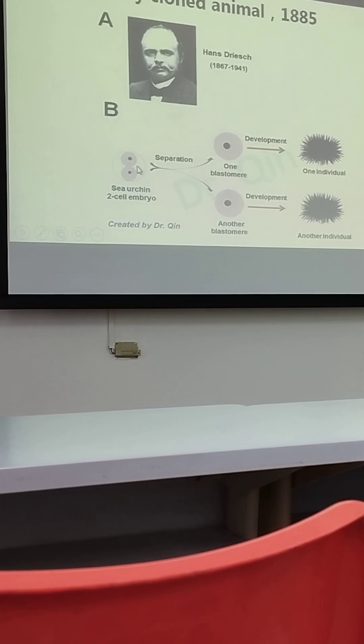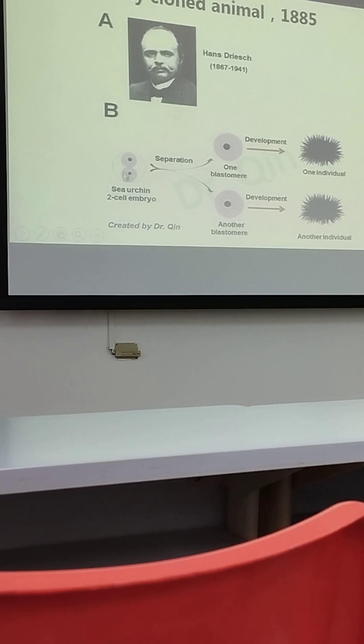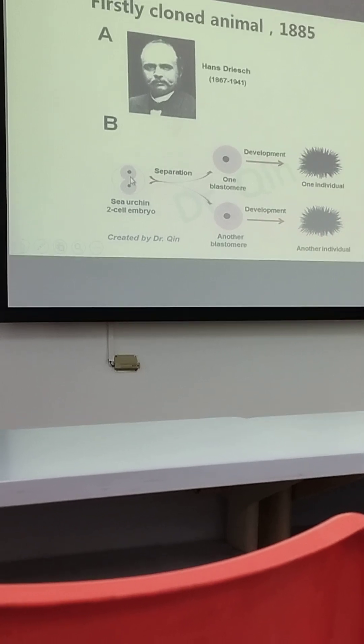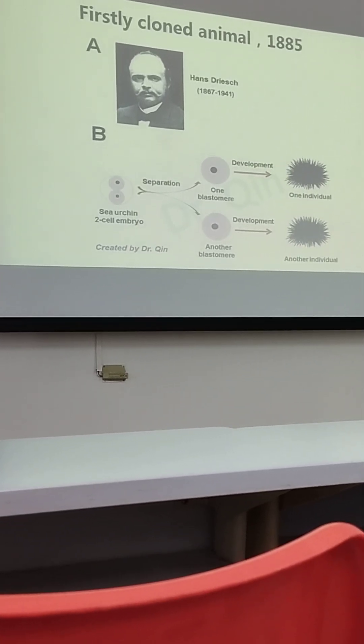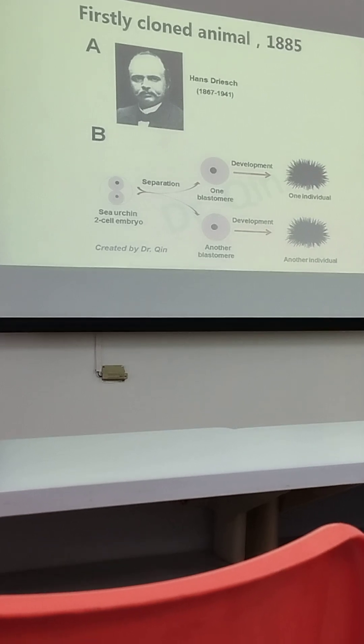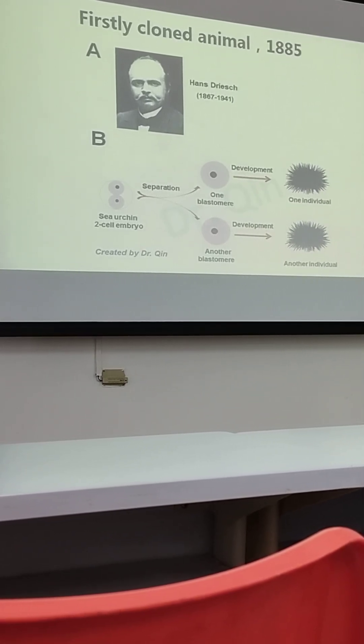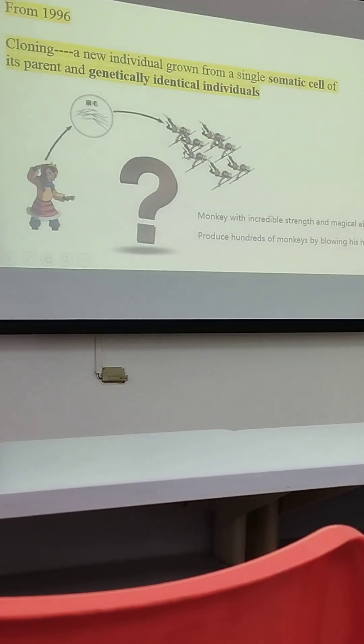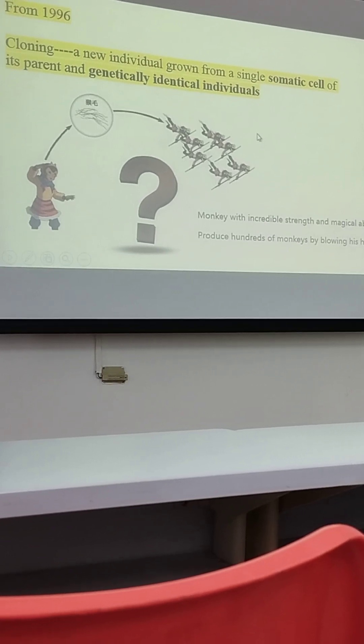But this cloned animal is from embryos, right? From embryos. Especially for mammal embryos, after fertilization, you split into two, then to four, to eight, right? So two embryos, if you separate them, each one can go to form individuals. So today we'll talk about the SCNT.